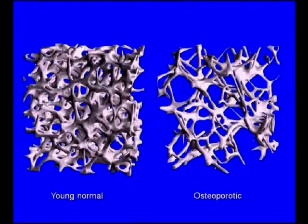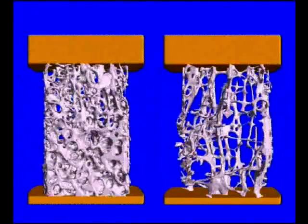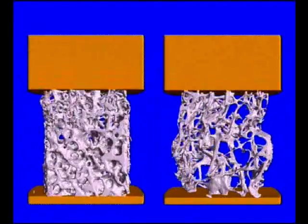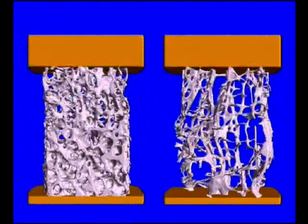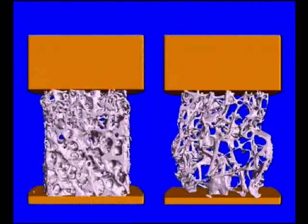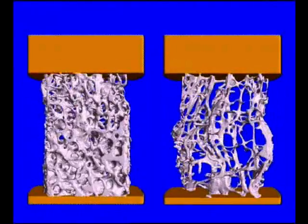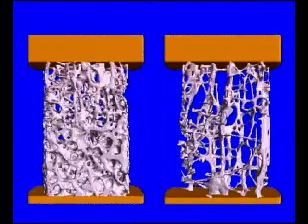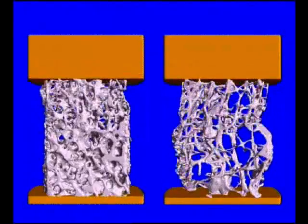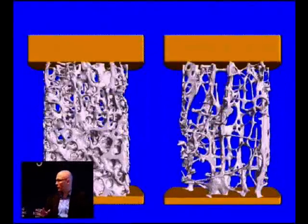So one thing that we thought we should do is to look at functional imaging approaches that really show you how bone fails. And this is such an example. Here you have a very good bone stock and you can see the local failure here that is just very local in this area. Whereas in the osteoporotic case, you can see that the bone is failing everywhere. It is catastrophic.